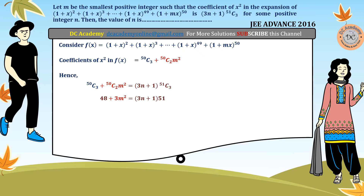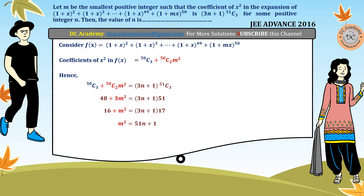From 3m² = 3·51·n + 3, dividing both sides by 3, we get m² = 51n + 1. We need to find the smallest positive integer n such that m is also a positive integer, meaning 51n + 1 must be a perfect square.